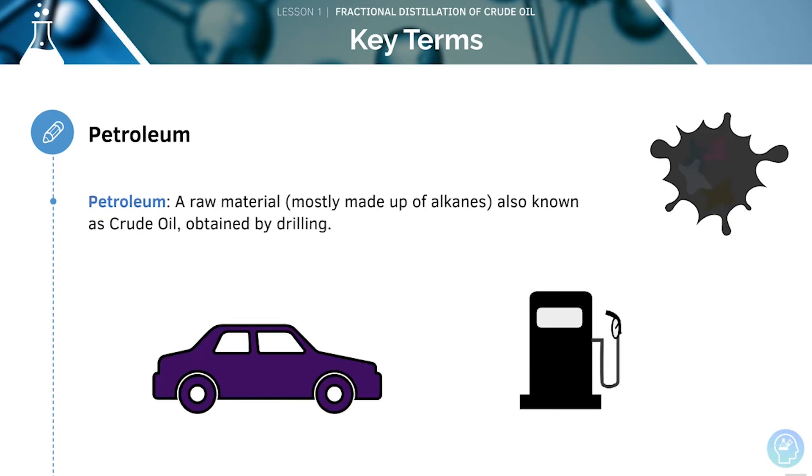Our next key term is petroleum. This is a raw material which is mostly made up of alkanes and is also known as crude oil. We can obtain this substance by drilling.